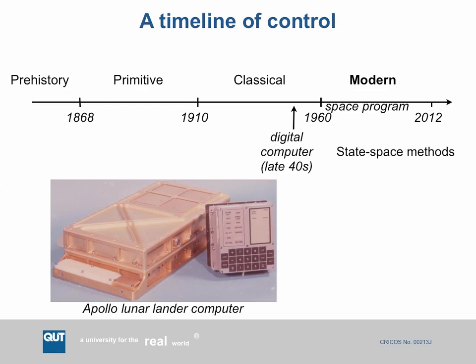Moving into the modern era, generally considered to start in 1960, it was made possible by the invention of the digital computer in the late 1940s — a technology developed during World War II that became available just after the war, but was really driven by the space program which kicked into high gear in the early 1960s. It's the idea of using computers in a control system that really defines the modern control era, and state space methods introduced in previous lectures are all part of modern control theory.